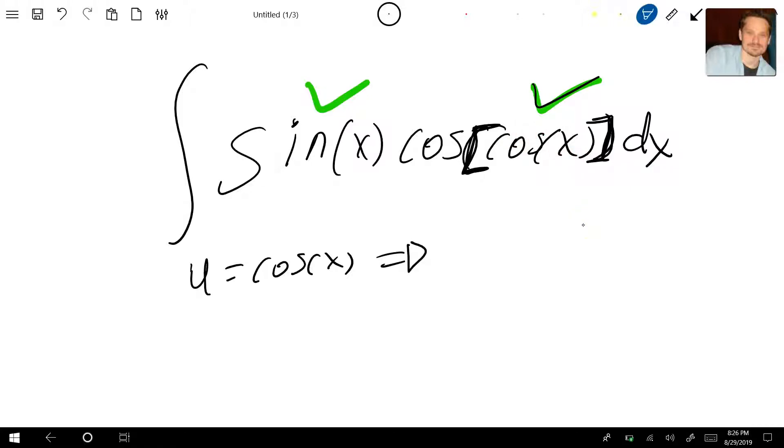Once you have this, the next step is to differentiate. So I'm going to have du equals negative sine of x dx. Now you're going to make a comparison. Take a look. You have dx, and you have dx, you have sine x, and you have sine x.